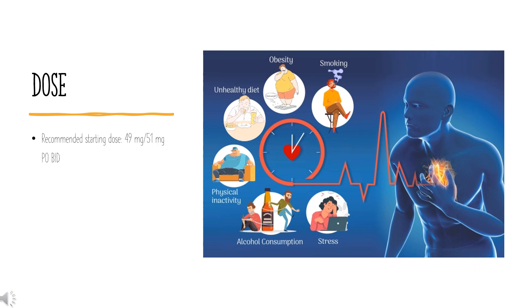Dose — Heart Failure: Indicated to reduce risk of cardiovascular death and hospitalization in chronic heart failure (CHF); benefits are most clearly evident in patients with left ventricular ejection fraction (LVEF) below normal. Recommended starting dose: 49 mg/51 mg PO BID. Target maintenance dose: after 2 to 4 weeks, double the dose to 97 mg/103 mg PO BID as tolerated.